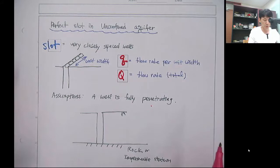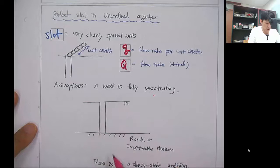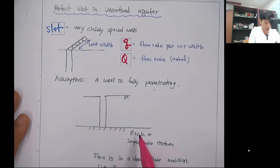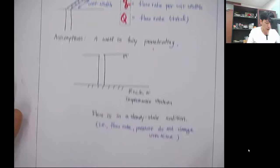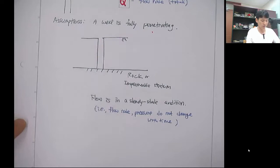Let's talk about the perfect slots in an unconfined aquifer. A slot is when wells are closely spaced so that it behaves more like a trench. The first assumption is that the well is fully penetrating, meaning it penetrates down to the impermeable stratum — this is called the perfect slot condition. The flow is in a steady-state condition, so flow rate and pressure do not change with time.